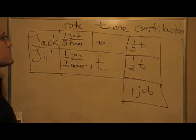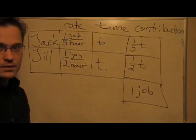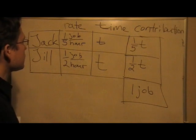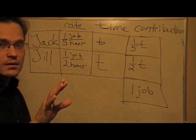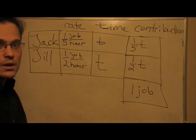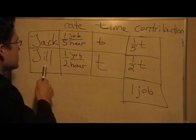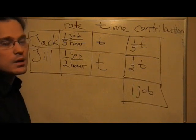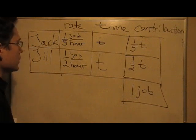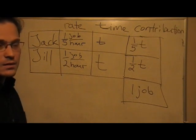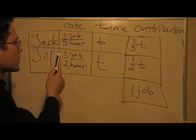Let's say Jack's work rate is one job every five hours. So imagine that if Jack had to paint a wall alone, it would take him five hours. If Jill had to do the same job, it would take her two hours. So Jill works faster than Jack.